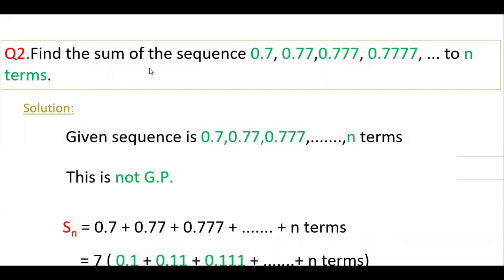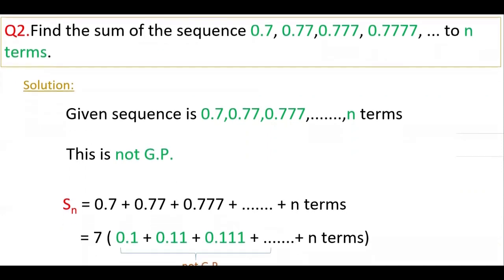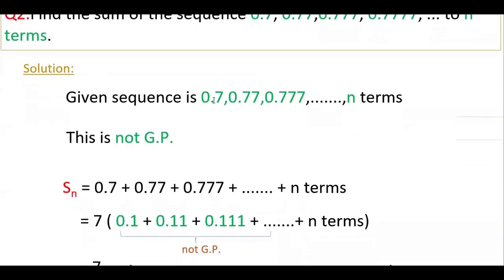This is the second problem: find the sum of the sequence 0.7, 0.77, 0.777, etc., to n terms. First, check whether this is GP or not. This is similar to the previous one but the numbers are decimals. If you take the common ratio, it is not the same, so this is not GP. You have to convert it into GP.